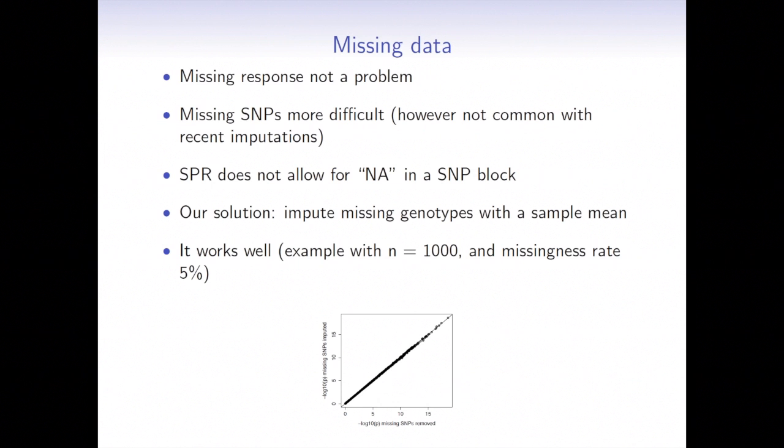I want to mention a little bit the missing data. So once you have missing responses, it's not a problem, because that means that the whole individual is just removed from the analysis. But missing SNPs are more difficult to handle, because in principle you can't have any NA in the SNP matrix, because once you have any NA, the cross-product will return the NA value for that beta.